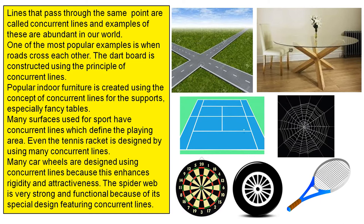One of the most popular examples is when roads cross each other. The dartboard is constructed using the principle of concurrent lines. Popular indoor furniture is created using the concept of concurrent lines for the supports, especially fancy tables.